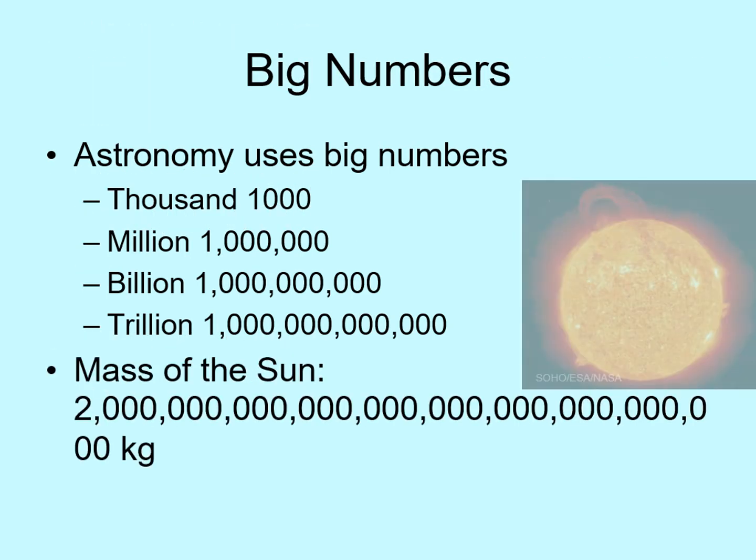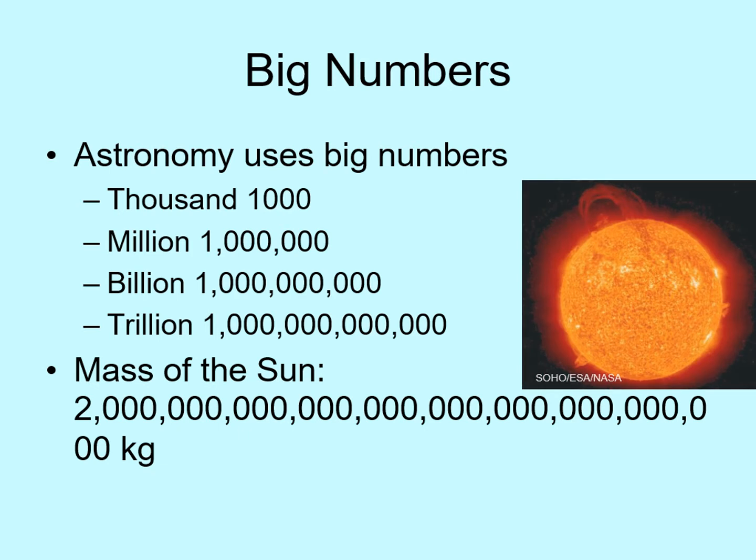Here's a big number — the mass of the sun. In kilograms, it's a 2 followed by 30 zeros. That's ridiculous. Nobody wants to be writing out numbers like that.